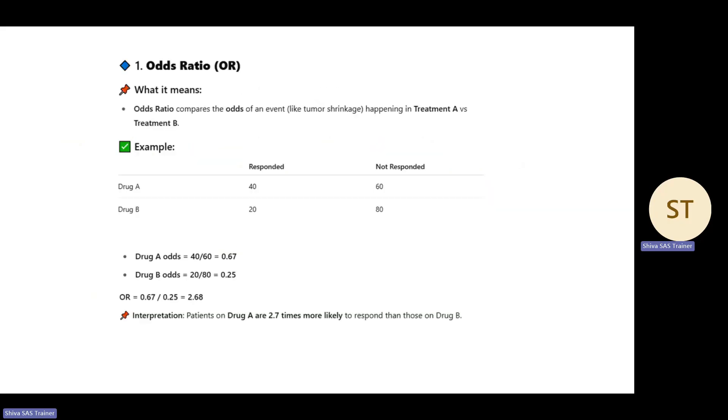Odds ratio compares the odds of an event like tumor shrinkage happening in treatment A versus treatment B. For example, here's how we calculate odds ratio: some subjects are taking Drug A, some subjects are taking Drug B. In Drug A, 40 responded and 60 did not respond.